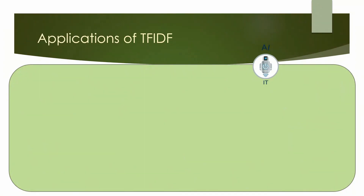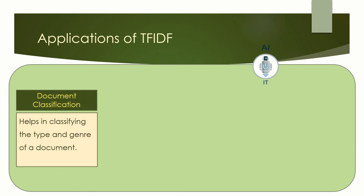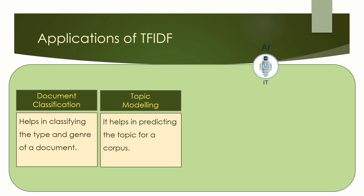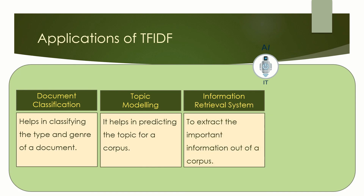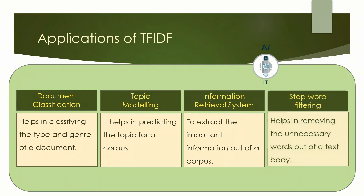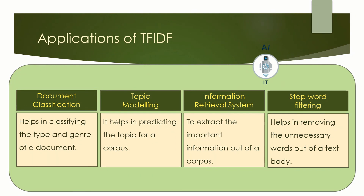What are the practical applications of TF-IDF? We find TF-IDF used in document classification, wherein you classify the type and genre of the document. The second application is topic modeling, wherein an AI model can easily predict the topic for a given corpus. The third application is the information retrieval system, used to extract important information out of a corpus. Finally, stop word filtering, wherein we remove all unnecessary words out of a text body. I hope these two algorithms and their applications are clear to you. Please like, share and subscribe to my YouTube channel.